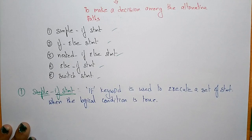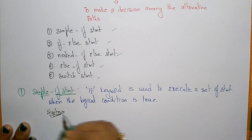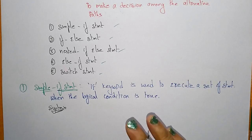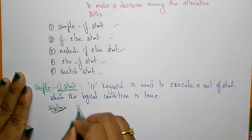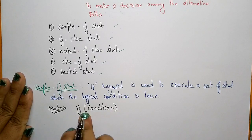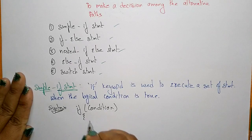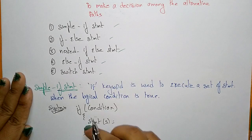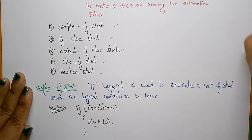Let me write the syntax for the if statement. The syntax is: if (condition) — whenever the condition within the parenthesis is satisfied, it executes the series of statements inside the braces. This block is called the if block. If the condition is not satisfied, it doesn't enter this block.